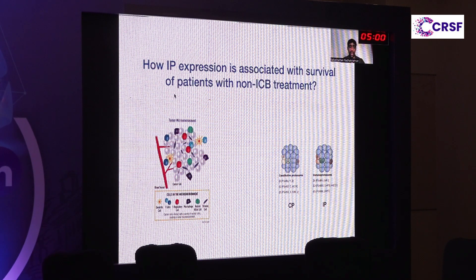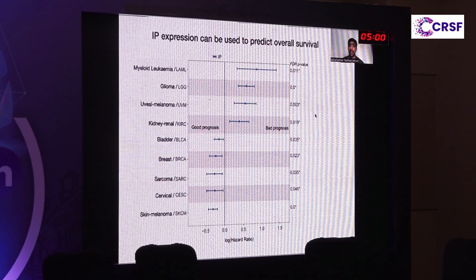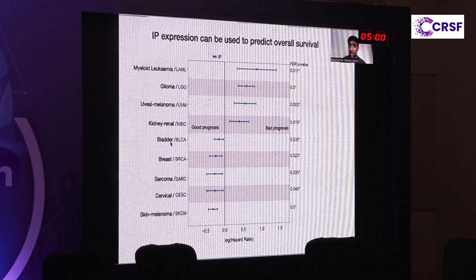Given that high immunoproteasome expression is associated with immune cell infiltration, we asked whether this is also associated with prognosis for standard of care treatment — surgery followed by chemo-radiation in the TCGA data. As expected, in skin melanoma higher expression is associated with better prognosis. Surprisingly, other tumor types such as cervical, sarcoma, breast, and bladder also show good prognosis with higher immunoproteasome expression, whereas some other tumor types showed mixed prognosis. However, the molecular mechanism underlying this is not yet clear.